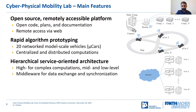Now let us talk about the architecture of the lab. The lab consists of different modules. We constructed it modularly to be able to easily replace and test single modules. In the lab, we follow the scheme: sense, plan, act. Additionally, we define an infrastructure layer. The infrastructure layer consists of a scenario server, a map, and a module which adds errors and noise to signals to be as realistic as possible.